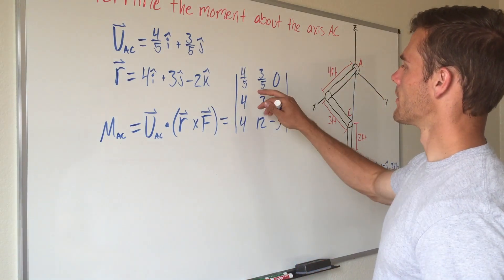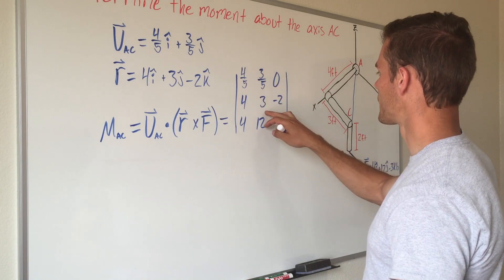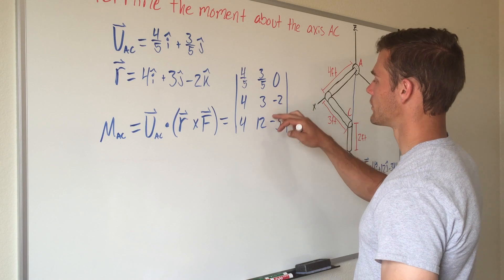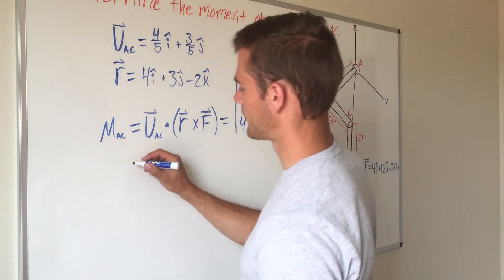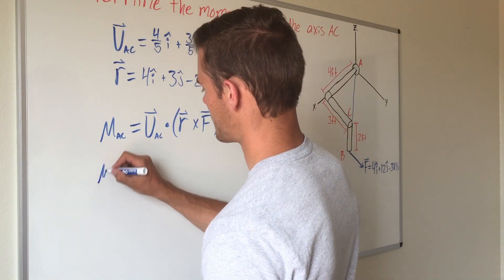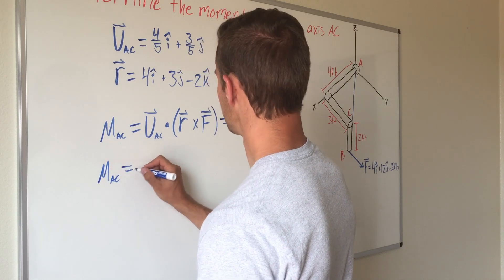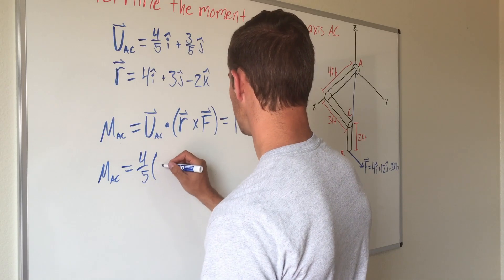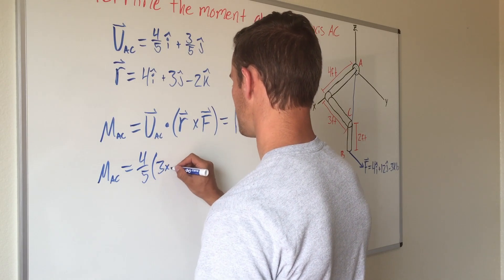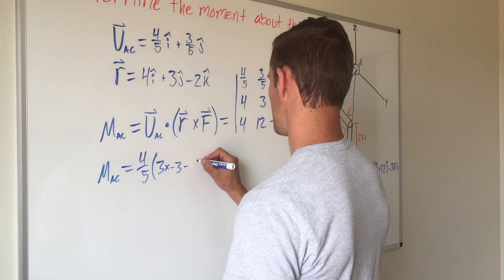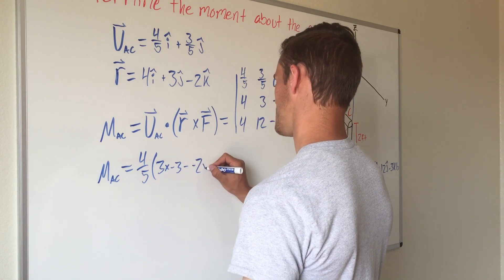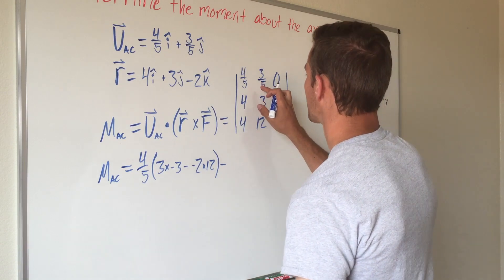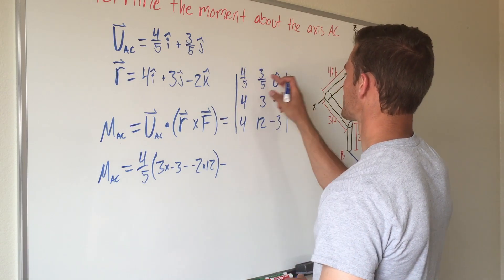So we're going to multiply that out: it will be 4 fifths multiplied by 3 times negative 3 minus negative 2 times 12. So magnitude of our moment about AC equals 4 fifths times by 3 times negative 3 minus negative 2 times 12.